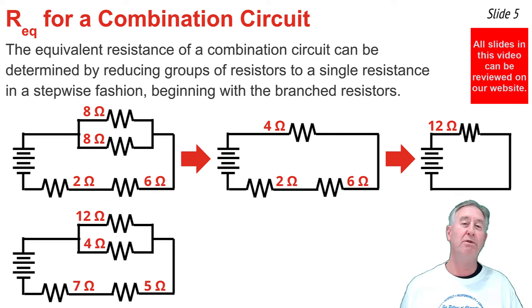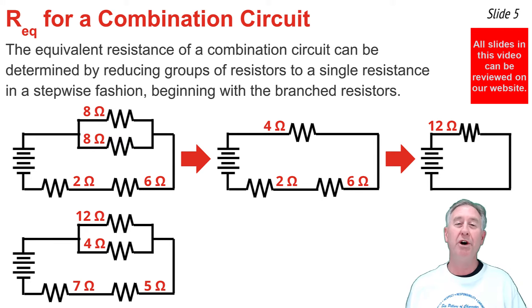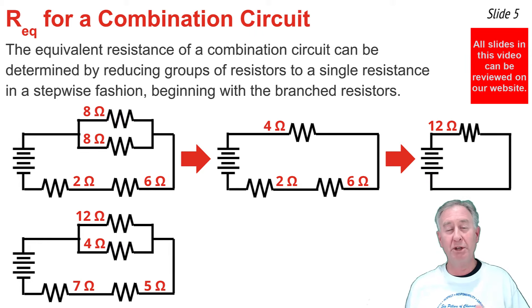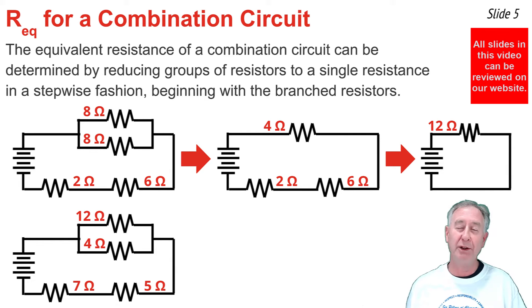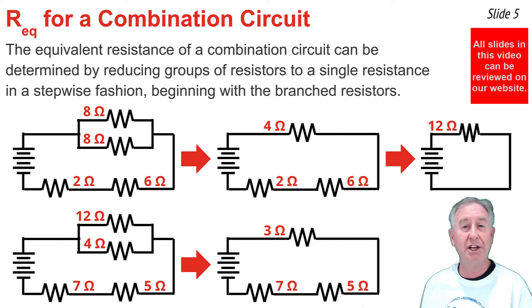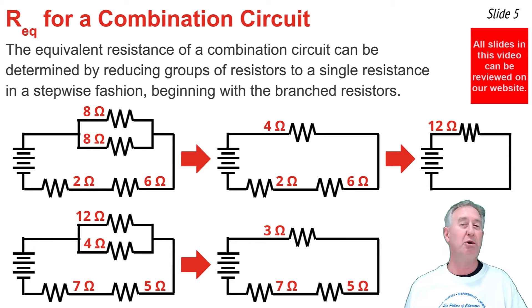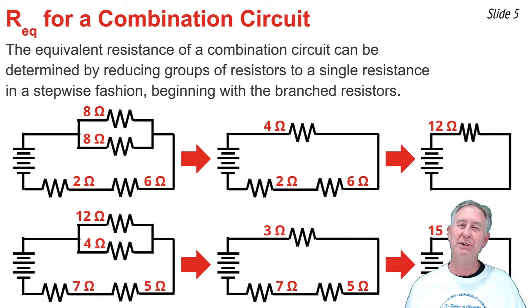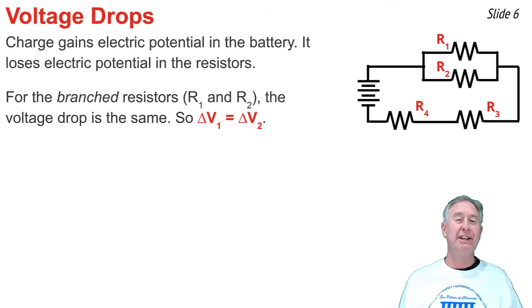In the second example, 4 ohms and 12 ohms are in parallel. Computing 1/4 plus 1/12 gives 0.3333 repeating, and taking the reciprocal yields 3 ohms — so 4 ohms and 12 ohms in parallel equals a single 3-ohm resistor. Now with three resistors all in series, we go 3 ohms plus 5 ohms plus 7 ohms to get a total equivalent resistance of 15 ohms.